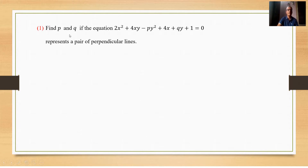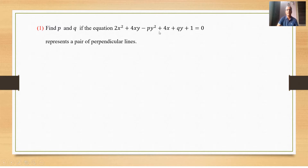The next problem: Find p and q if the equation 2x² + 4xy − py² + 4x + qy + 1 = 0 represents a pair of perpendicular lines. This equation is of the second degree in x and y. For it to represent a pair of perpendicular lines, we apply the perpendicularity condition.